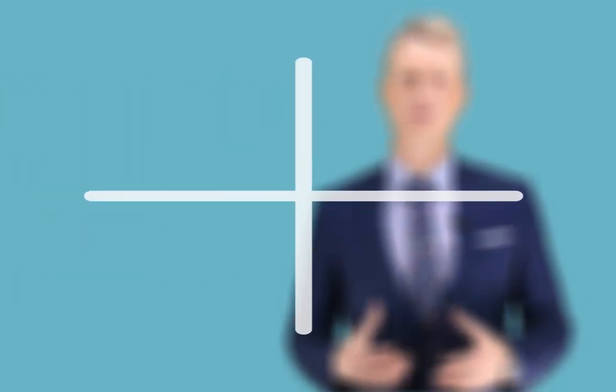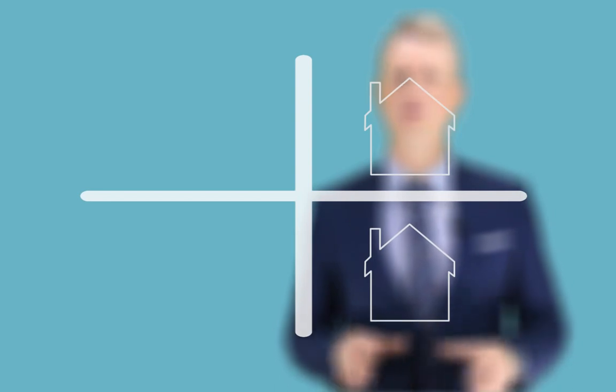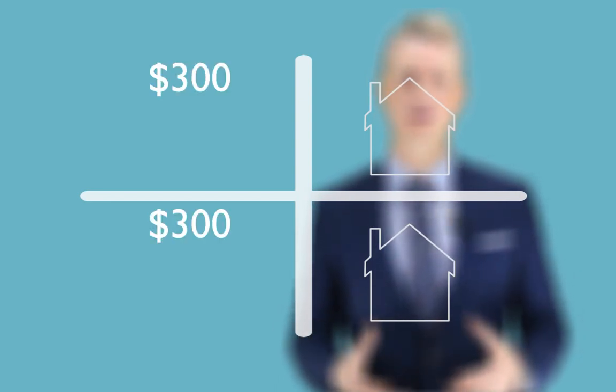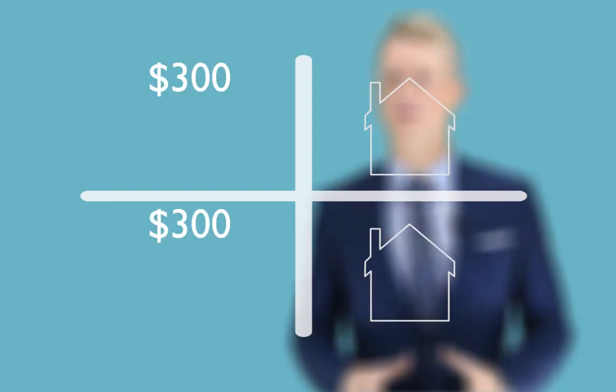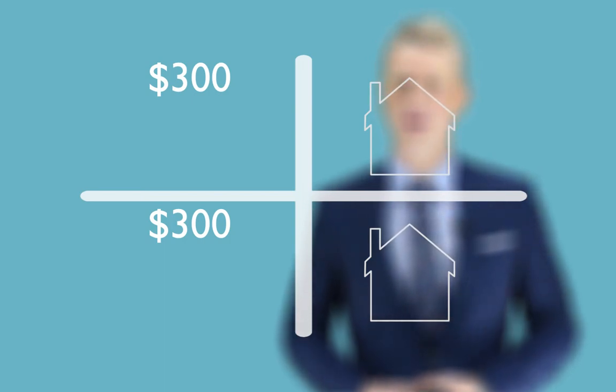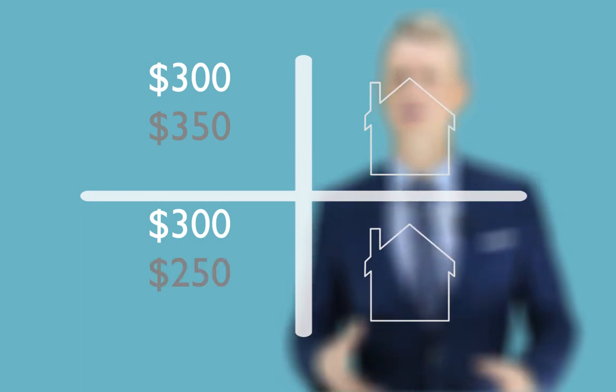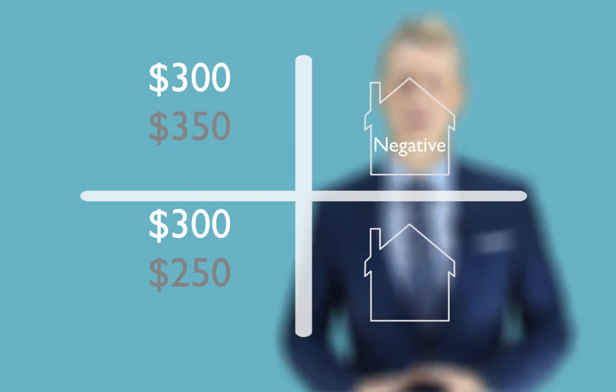Let's imagine for a second we have two different investment properties. Now both these investment properties have an income of $300 a week because let's say they have tenants and they're paying $300 a week in rent. But they have different expenses. The one on the top has expenses of $350 a week where the one on the bottom has expenses of $250 a week. Now this would mean that the one on the top is negatively geared whilst the one on the bottom is positively geared.